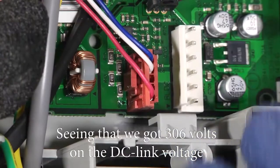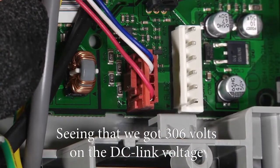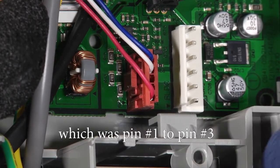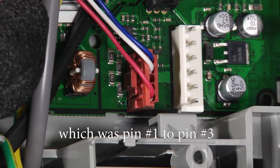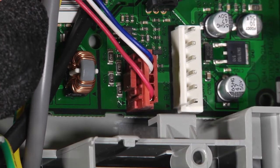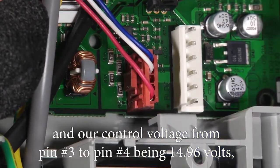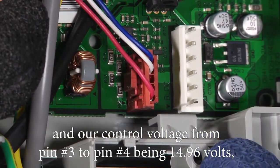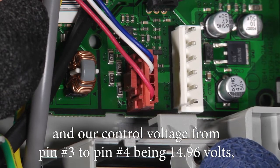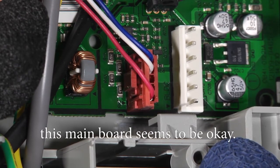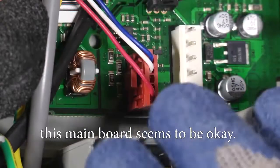Seeing that we got 306 volts on the DC link voltage, which was pin number one to pin number three, and our control voltage from pin number three to pin number four being 14.96 volts, this main board seems to be okay.